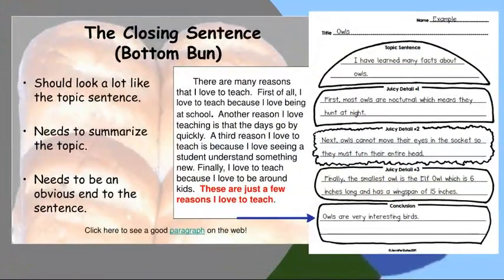The concluding statement is the bottom bun. It should look a lot like the topic sentence and needs to summarize the topic. The most important thing about the concluding statement is that it needs to have an obvious end to the whole paragraph. Owls are very interesting birds. This is an amazing concluding statement. It ended my paragraph in a proper way.